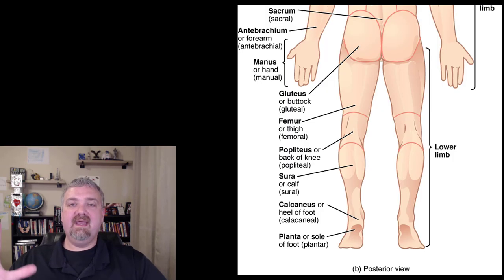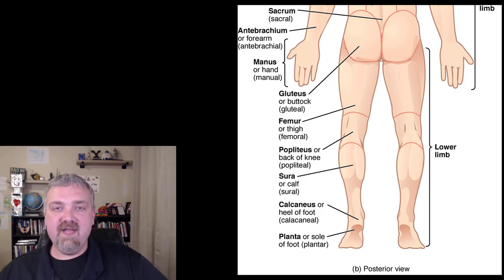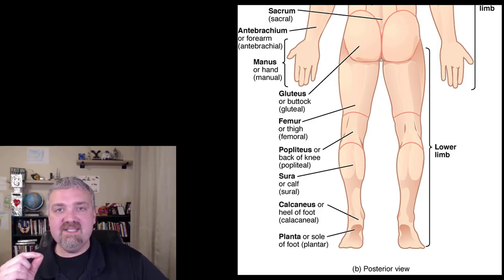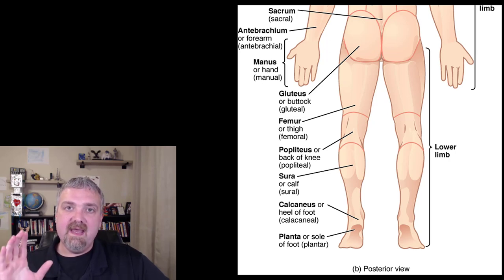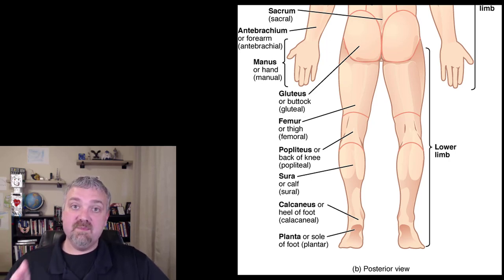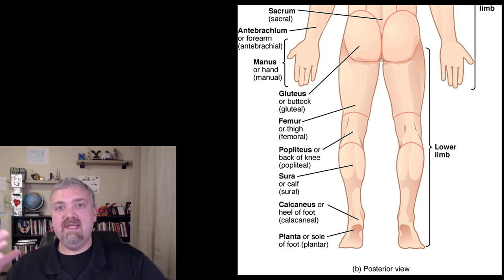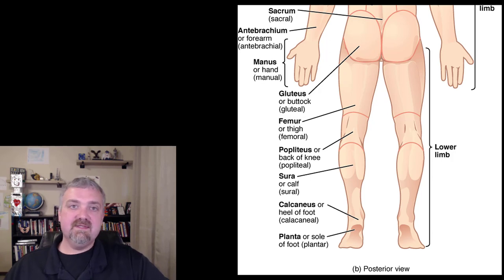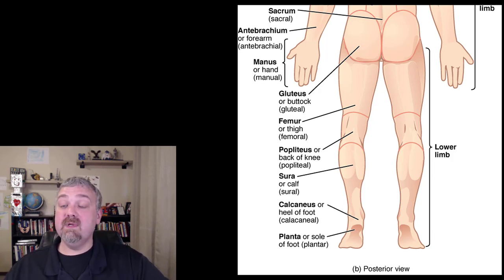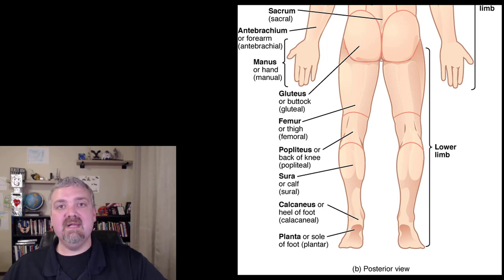And that's it. Again, I know we're just flying through these — you have to study these, but I at least wanted you to hear them so you know how I say them. Super important to learn these terms. The more you learn right now here in chapter 1, the easier things are going to be when you're naming bones, muscles, joints, arteries, veins, nerves, and lymphatics. It's going to help you a lot in the future. I hope this helps. Have a wonderful day. Be blessed.